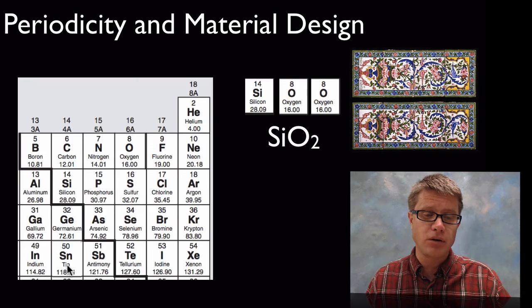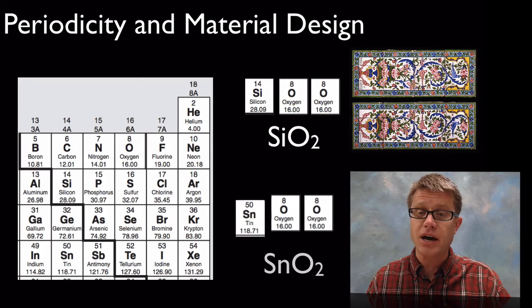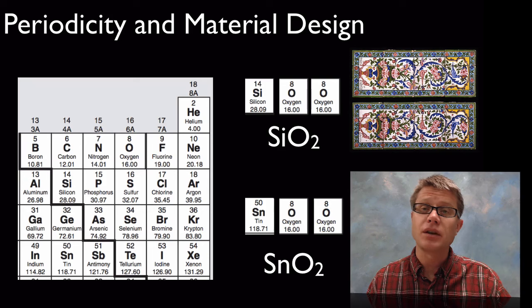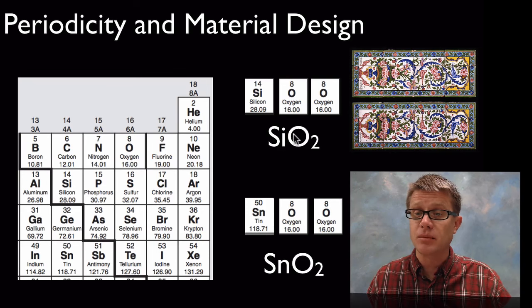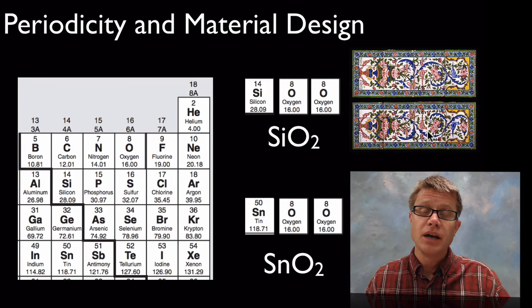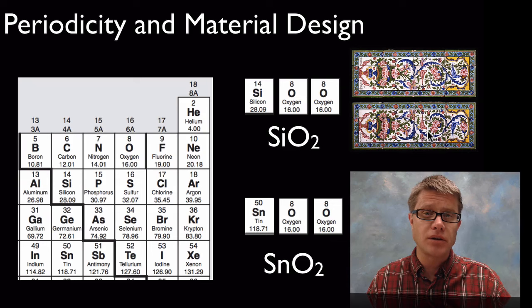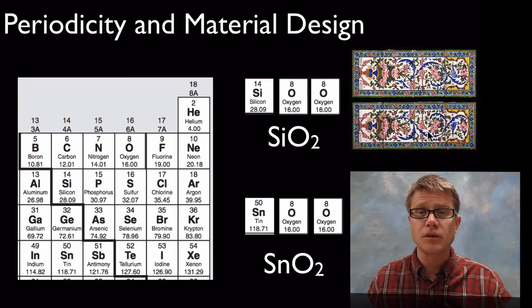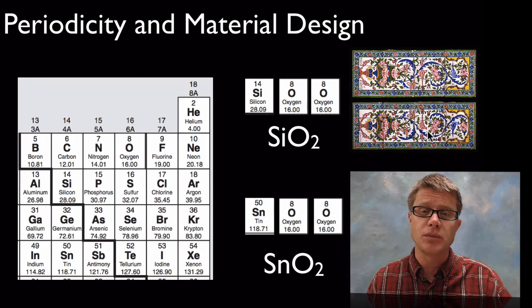And so if silicon dioxide can make that, well what about something below that? What about tin? If I were to grab that I could say maybe those are going to form ceramics. And they will. They'll form glazes that are going to be on these ceramic tiles as well. And so what scientists can do is they can dance around the periodic table. And if you know some of these trends you can make predictions about new materials.